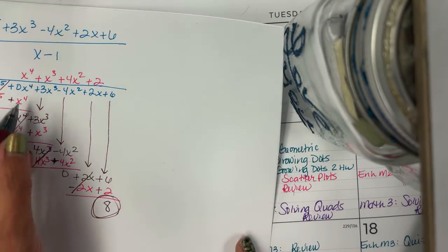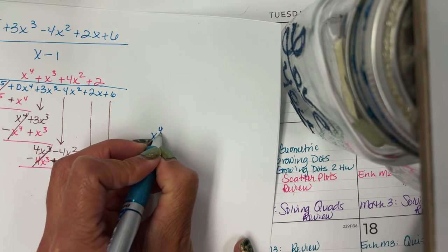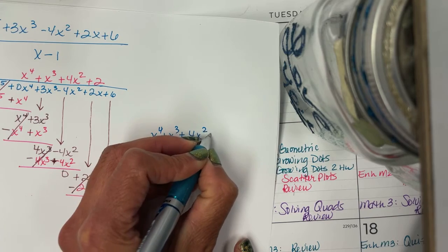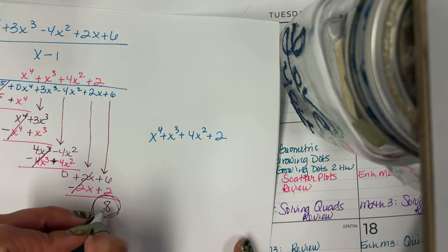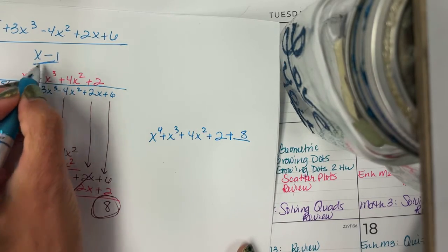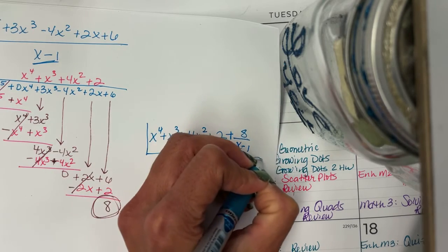All right. So my final answer then is all of that. So x to the 4th plus x to the 3rd plus 4x squared plus 2, and then the remainder is positive, so plus 8 all over the divisor, which is x minus 1. Just like we did with synthetic division.